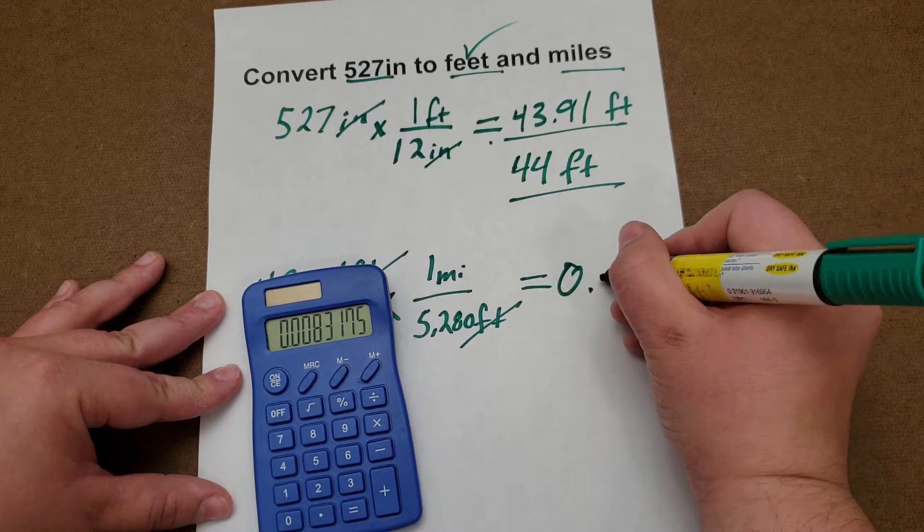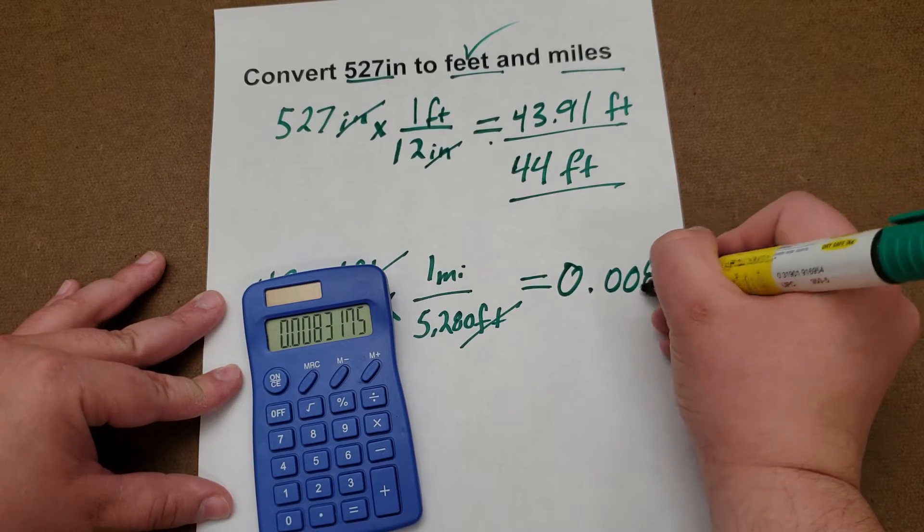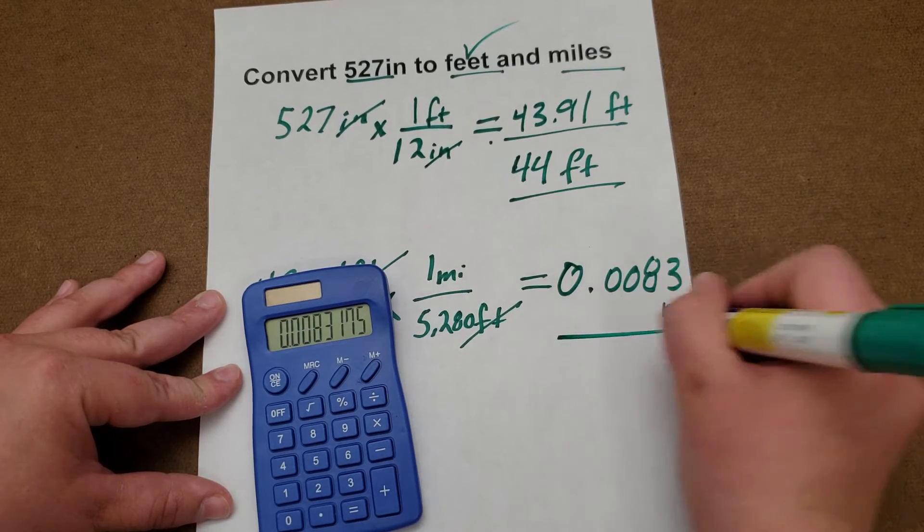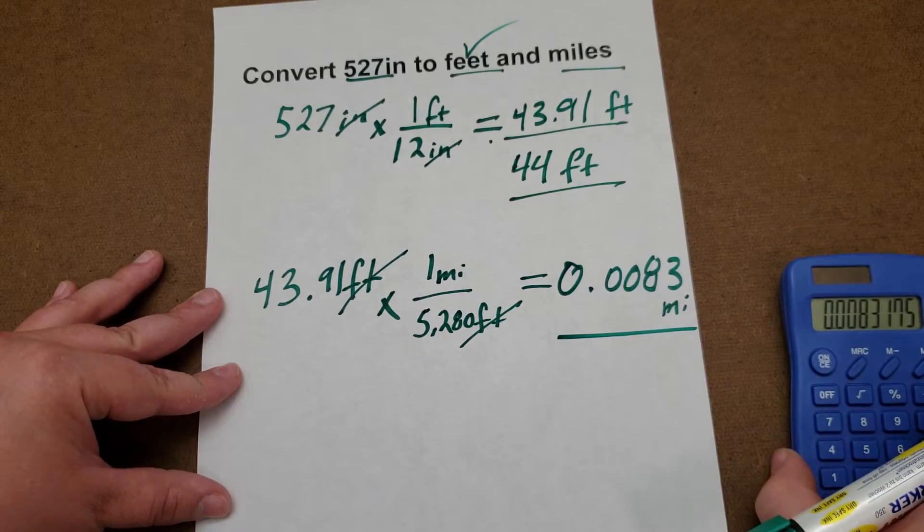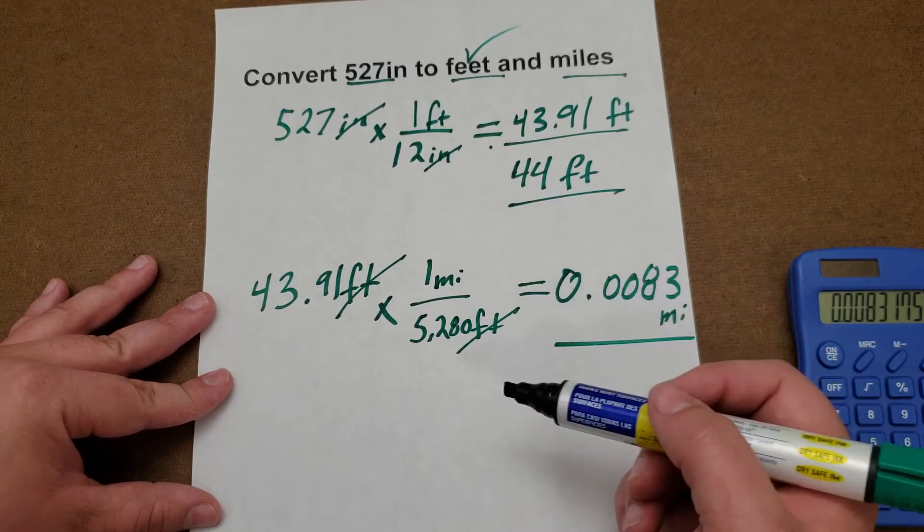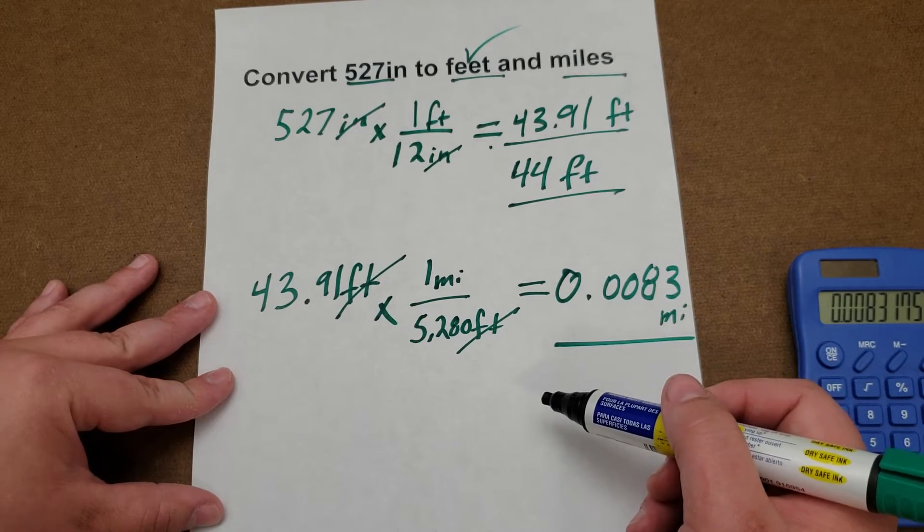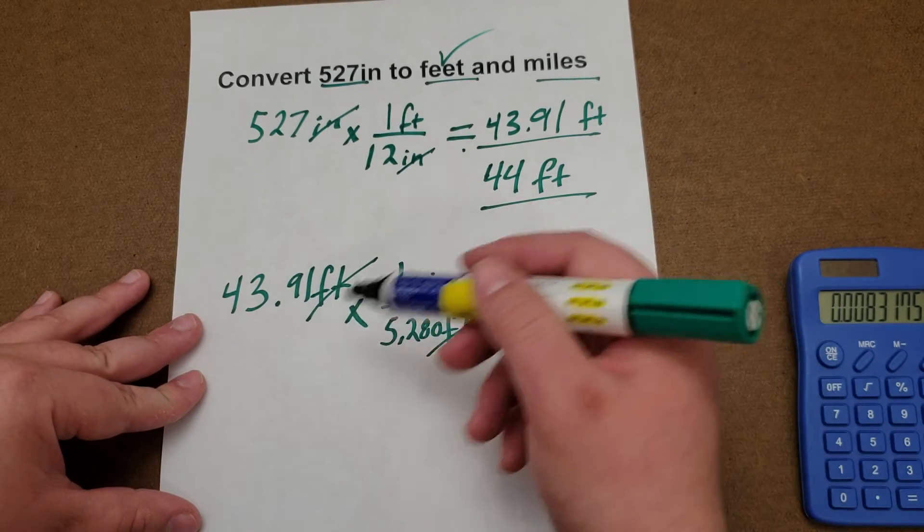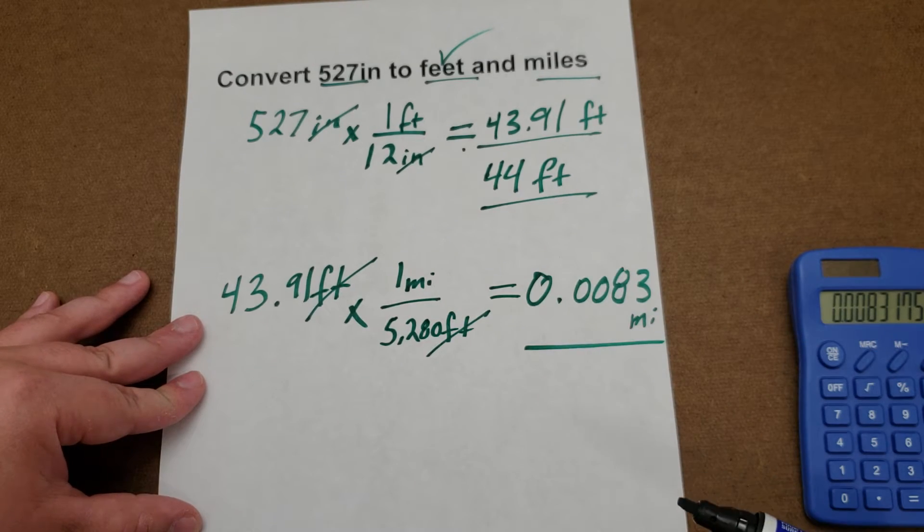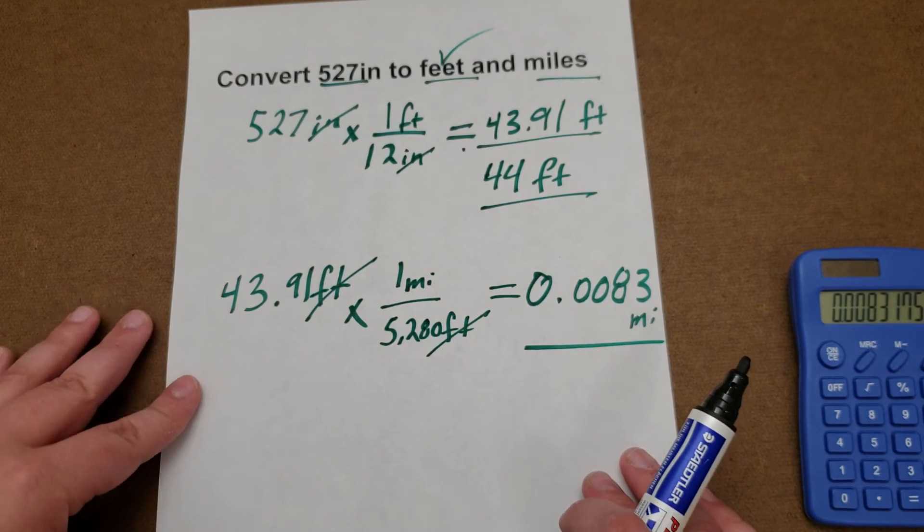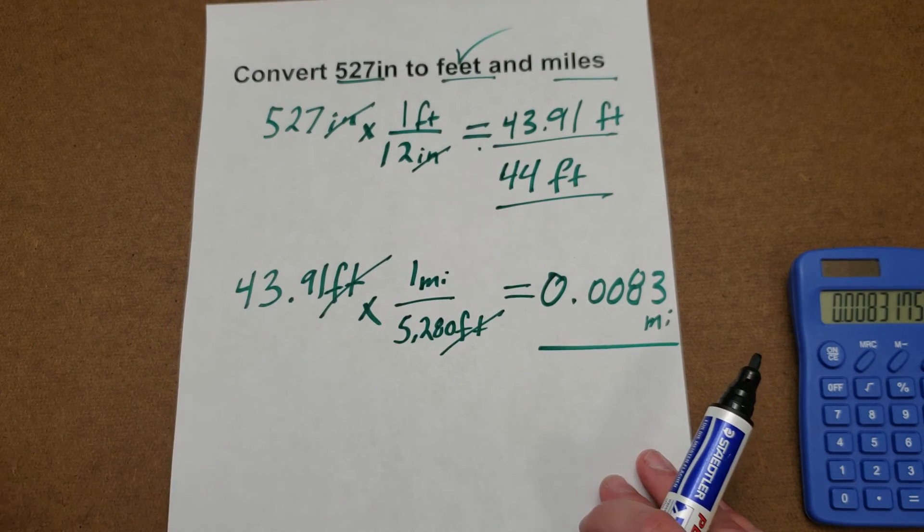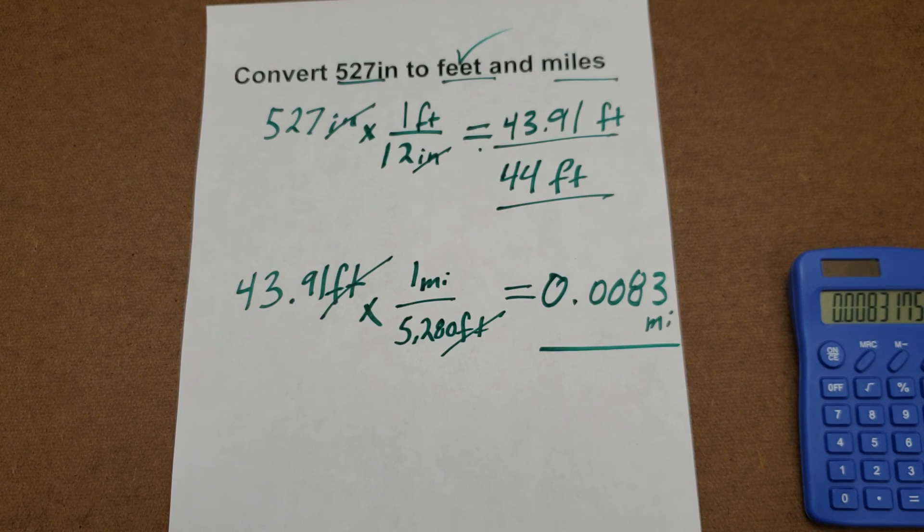So as you can see, making sure your units cancel, you always make sure you get the right answer. Because if you flip these, obviously your number is going to be way off, and also your units are going to mismatch. So if you have any suggestions for problems, please send them to the email listed below, and looking forward to seeing you again soon.